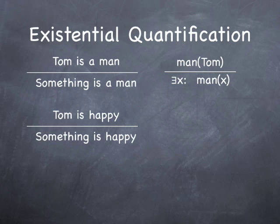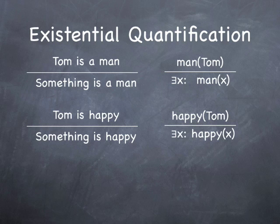Let's do another one. Tom is happy. We represent Tom as happy like this: happy parenthesis Tom. And then to apply our rule, we just delete the proper name Tom, replace it with x, and then we put exist x in front of it. That's it. There exists x such that x is happy.